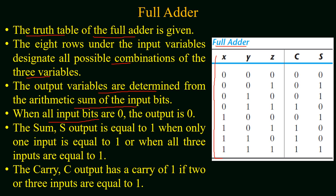When all bits are zero, both outputs are equal to zero. The output sum is equal to one only if any one input is equal to one, or if all three inputs are equal to one. Similarly, the carry output has a value of one if two or three inputs are equal to one.